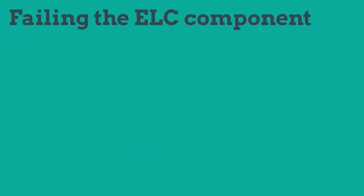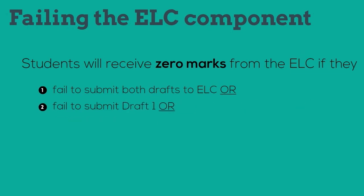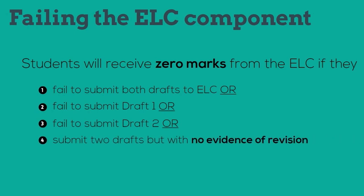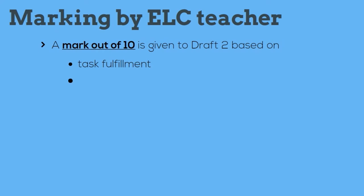Here comes the most interesting part — how to fail the ELC component. Students will receive zero marks from the ELC if they fail to submit both drafts, or if they fail to submit either Draft 1 or Draft 2. Also, if a student submits both drafts but the drafts look the same, he or she will get a zero as well, as there is no evidence of revision. The mark out of 10 is given to Draft 2 based on task fulfilment, organisation, language, and revision.